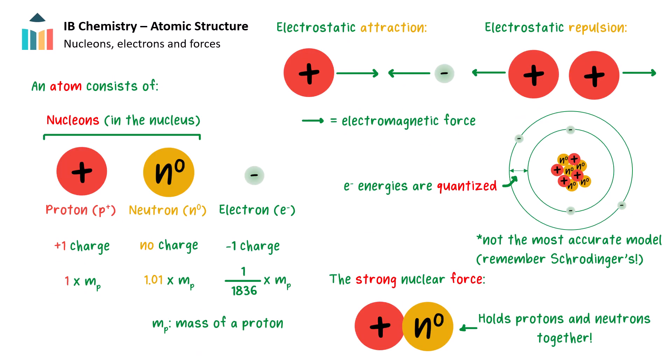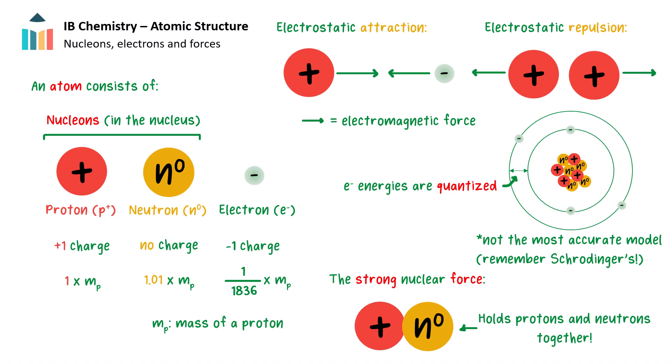An atom consists of protons and neutrons in the nucleus and electrons in shells around the nucleus. Protons and neutrons may together be referred to as nucleons. Protons and electrons have charges of 1+ and 1− respectively, but neutrons are uncharged. The mass of a neutron is only slightly larger than the mass of a proton, but the mass of an electron is much much smaller — almost 2000 times smaller. Electrons are attracted to the protons in the nucleus by the electromagnetic force, which operates over long distances. This force is termed electrostatic attraction.